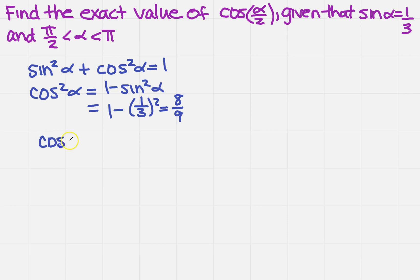So then the cosine of alpha is going to be the square root of that, the square root of 8 over 9. Now, is cosine going to be positive or negative? Well, since it's in quadrant 2, it's going to be negative. So this will simplify to negative 2 square root of 2 over 3.